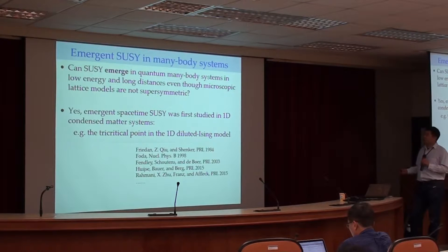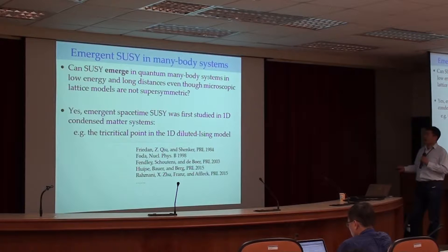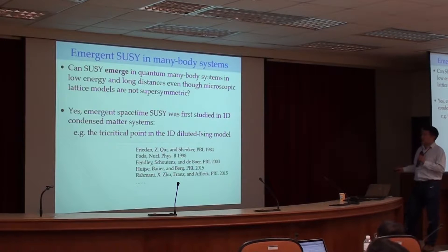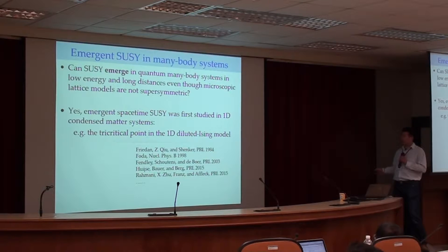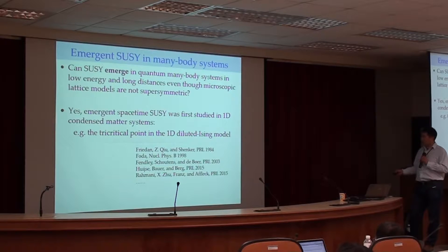But for us working on condensed matter systems, we ask: can supersymmetry emerge in a quantum many-body system at low energy and long distances, even though the microscopic systems are not supersymmetric? Yes - emergent spacetime SUSY was first studied in one dimension; the first example is a tri-critical point in the one-dimensional dilute Ising model with vacancies, first proposed in the 1980s.